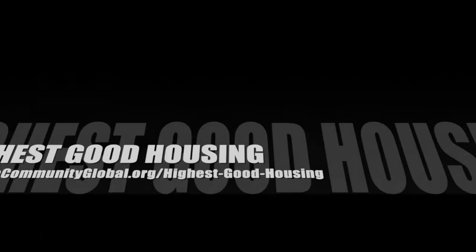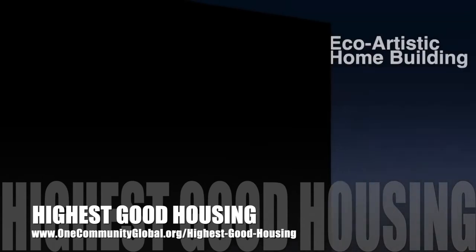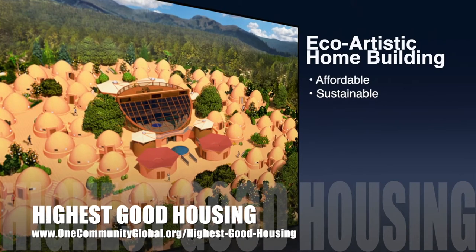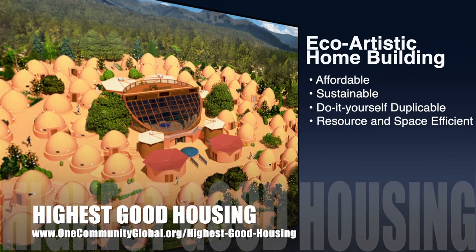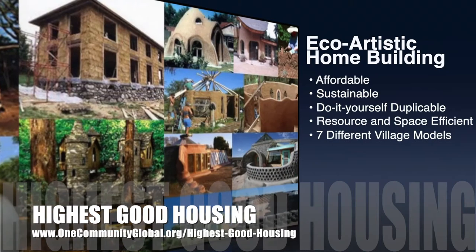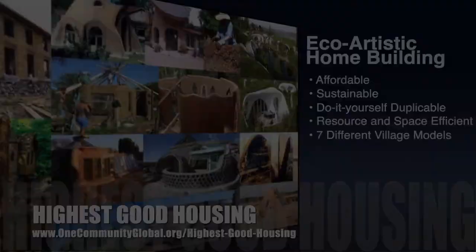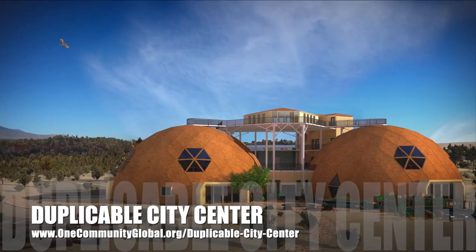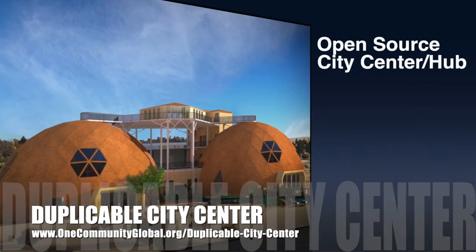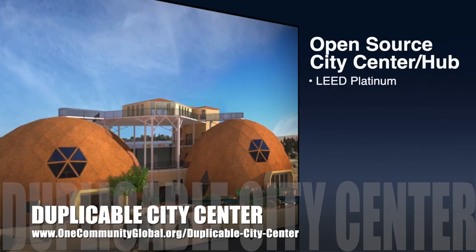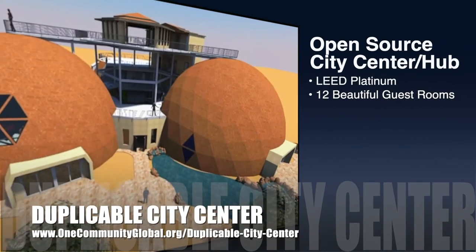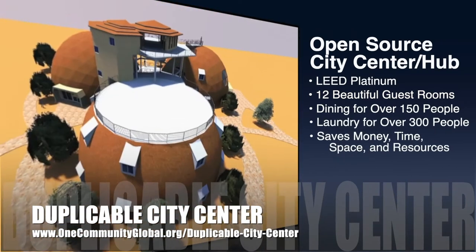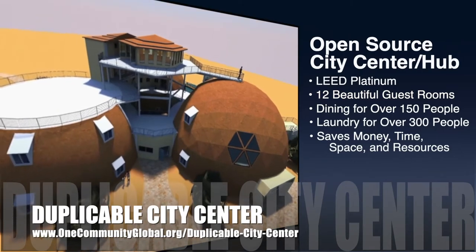The One Community approach to Highest Good Housing is eco-artistic home building that is affordable, sustainable, do-it-yourself duplicable, resource and space efficient, and consists of seven different sustainably constructed village models. One Community is also creating an open source, duplicable city center designed to be LEED Platinum certified, provide 12 guest rooms, dining for over 150 people, and laundry and recreation space for over 300 people, all while saving money, time, space, and resources.